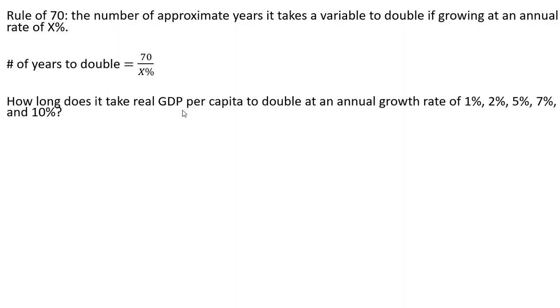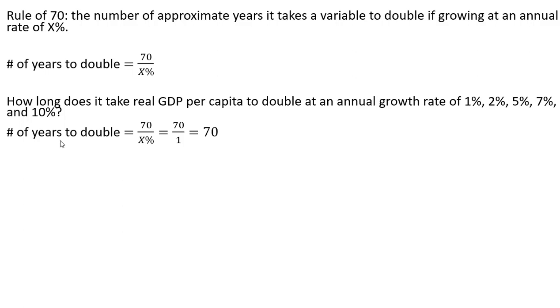How long does it take real GDP per capita to double at an annual growth rate of 1, 2, 5, 7, and 10 percent? The number of years to double is 70 divided by the percent.